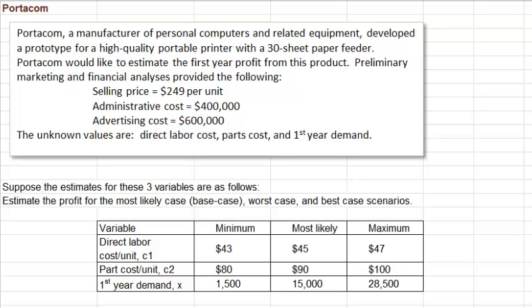For example, you want to calculate the profit you could make from a new product, but you don't have all the data you need, like the customer demand for your product. So what we do is assume a certain distribution for the customer demand, and then we could find the probability that the profit would be at least a certain level. The Portacom example here deals with risk analysis. This company, Portacom, has come up with a prototype for a new portable printer.